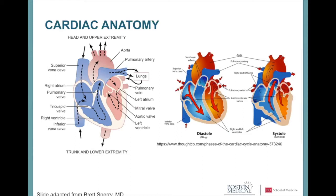The heart has two sides — right and left — and four chambers: two at the top called atria and two at the bottom called ventricles. The right side receives blood from the body into the right atrium and pumps it to the lungs through the pulmonary artery. Blood returns from the lungs through pulmonary veins into the left atrium, then the left ventricle, which pumps blood to the body.